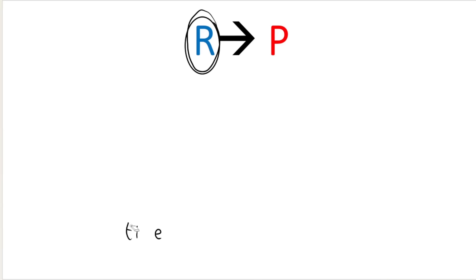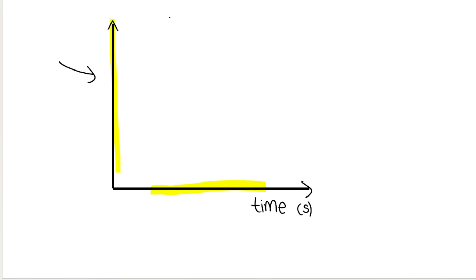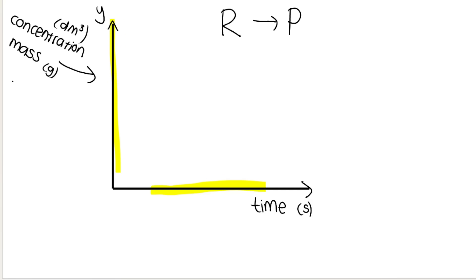It's very important to understand what we are measuring. When measuring the rate of reaction — going from reactants to products — we can decide, depending on the experiment or investigation, to have the y-axis represent concentration, maybe mass. It could even be volume — this is moles per cubic decimeter for concentration — or volume in cubic decimeters.